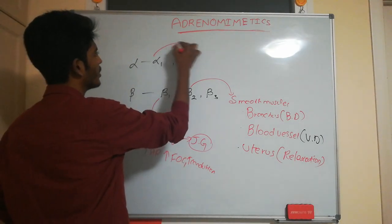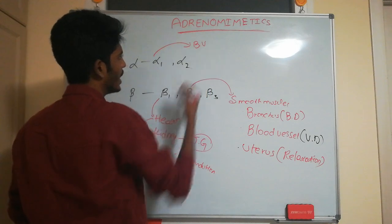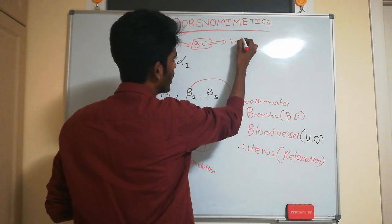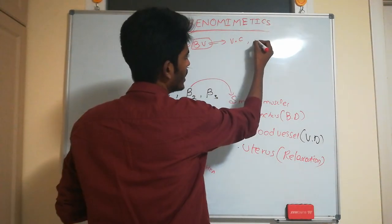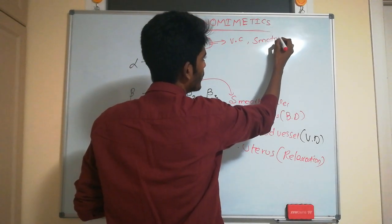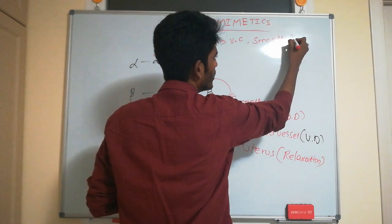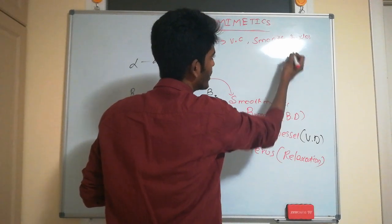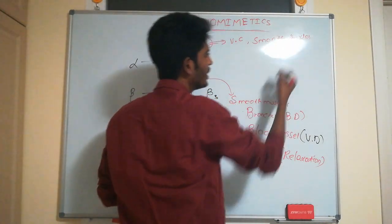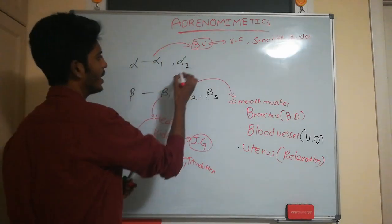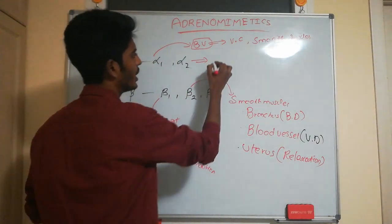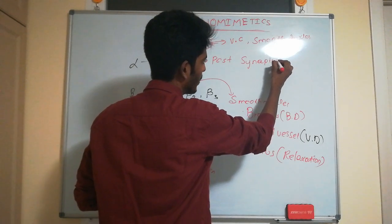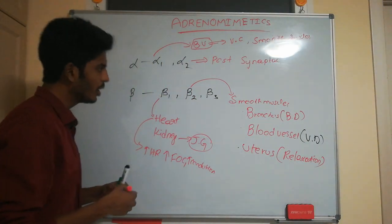Alpha 1 receptors are located in blood vessels, where they cause massive constriction, and also in the smooth muscles of the urinary bladder sphincter. Alpha 2 receptors are located post-synaptically.